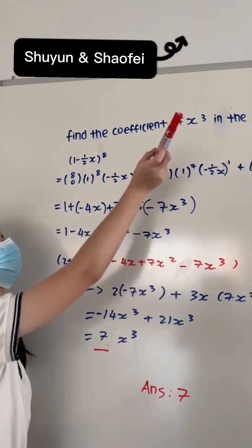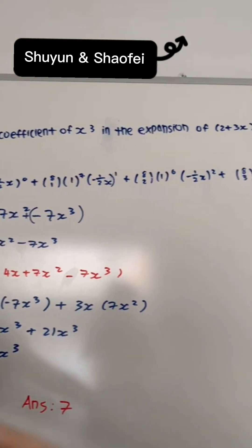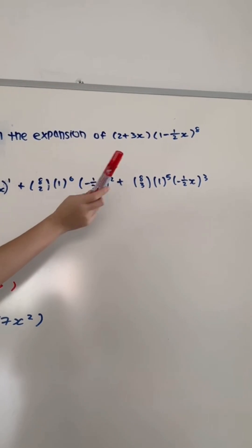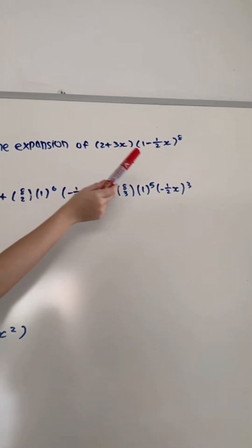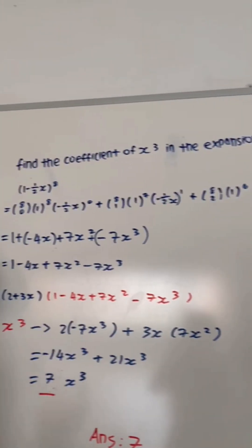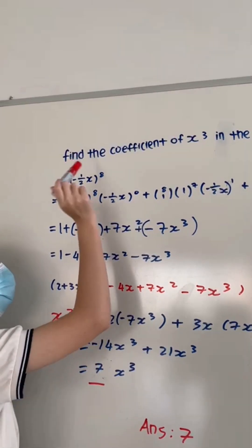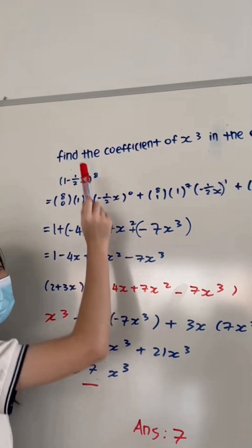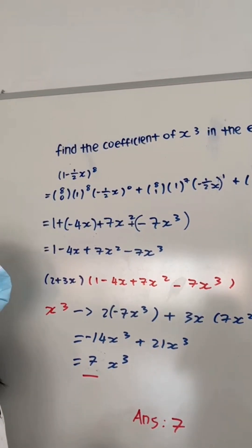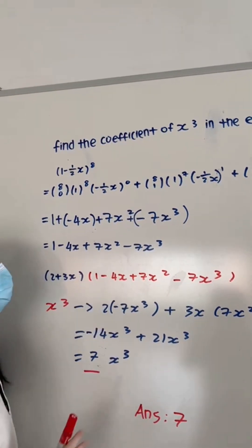To find the coefficient of x cubed in the expansion of (2 + 3x)(1 - ½x)^8, we first need to expand (1 - ½x)^8 using the binomial expansion. We will use the first four terms.